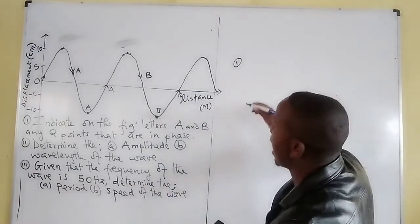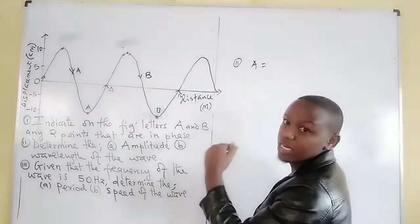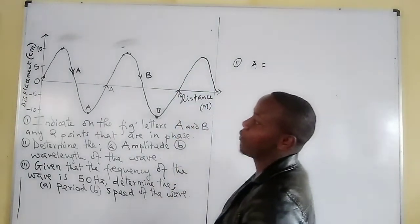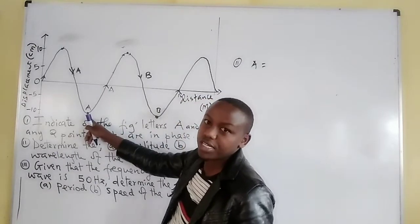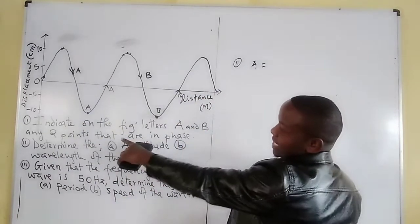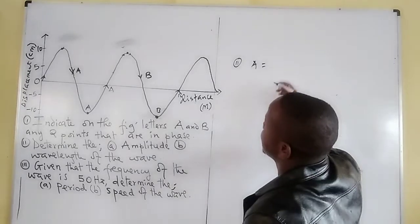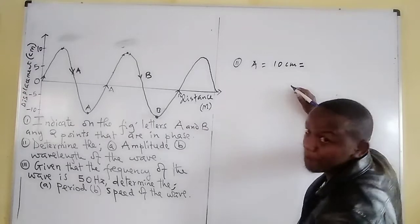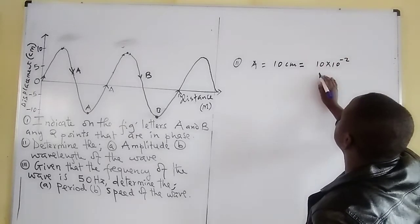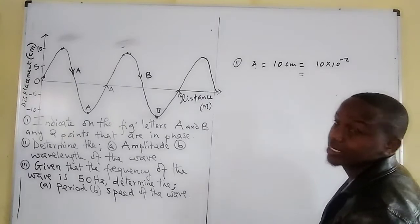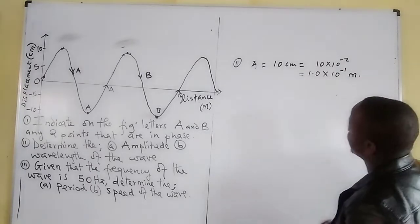Part 2: we are told to determine the amplitude. Amplitude is the maximum displacement from the mean position, either upwards or downwards. This particle is moving a distance of 10 cm up, and when it goes down it also moves 10 cm. Therefore the amplitude is 10 cm, which equals 0.10 m, or 1.0 × 10⁻¹ m.